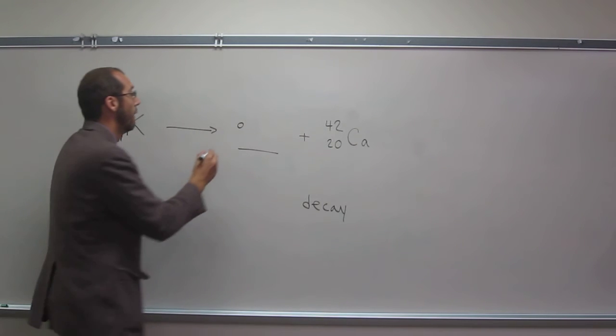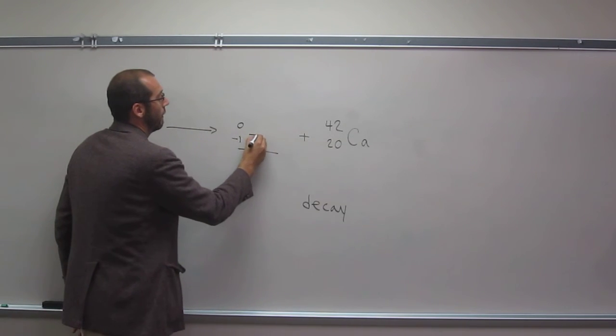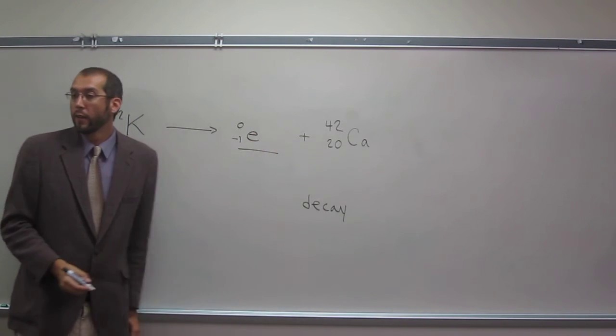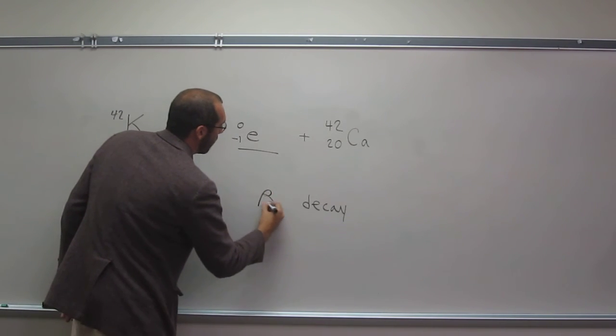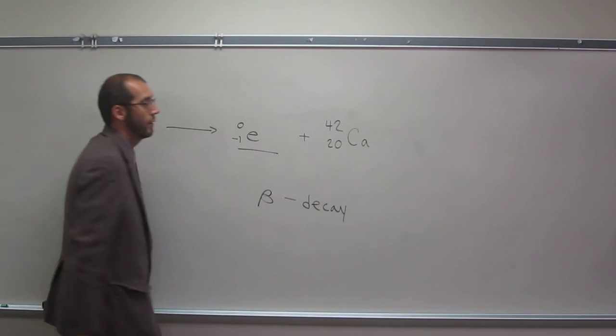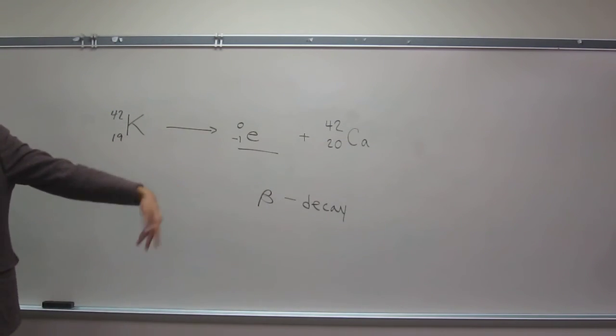It's 19. So this must be a negative one electron, right? So high-energy electron, we call it a beta particle, and so we call this process beta decay.